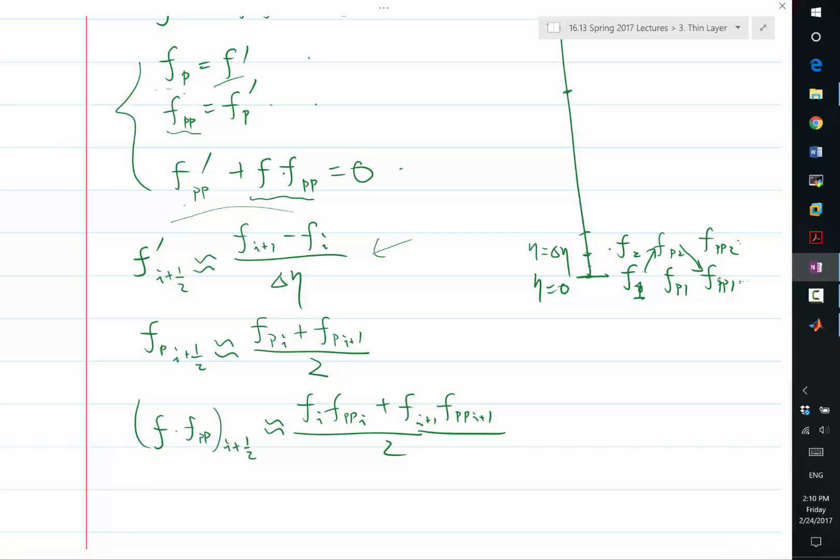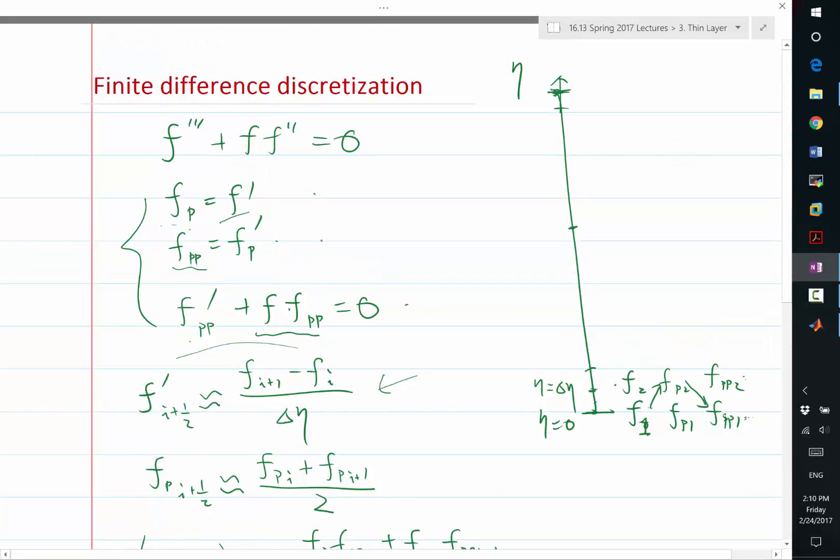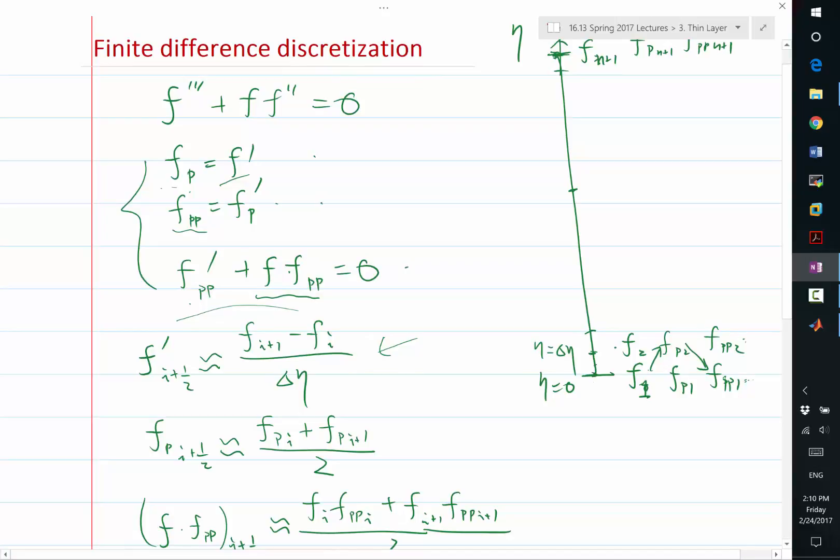So, with these equations, let's say we have n intervals and n plus one grid points, so here is going to be n plus one, fp n plus one, and fpp n plus one. How many equations do we get in this kind of discretization if every equation happens at the half grid point? 3n, right? So, we have n plus one unknowns at every grid point. But, because the equations happen at half grid points, we have three less equations than unknowns. We have 3n equations and 3n plus 3 unknowns.